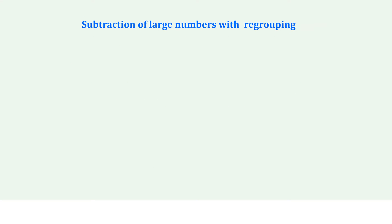Subtraction of large numbers with regrouping. Example: Subtract 31 lakhs 43,647 from 4 lakhs 44,000 — wait, the minuend is noted as 3,421 in the working.